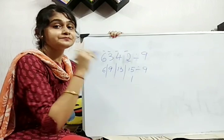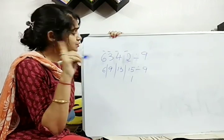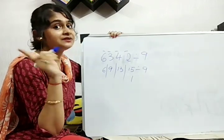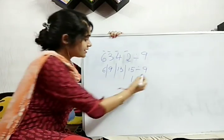9, 1 is a 9. Then, 10, 11, 12, 13, 14, 15. Means, 6. I will write here 6.